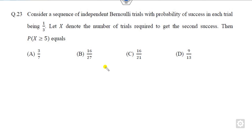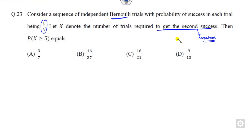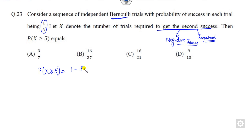Now look at question 23. This involves Bernoulli trials with probability of success p = 1/5. The requirement is to find the probability of the number of trials needed to get the second success. This is the negative binomial distribution. Your target is to find P(X = x) where x is the trial number on which the second success occurs.